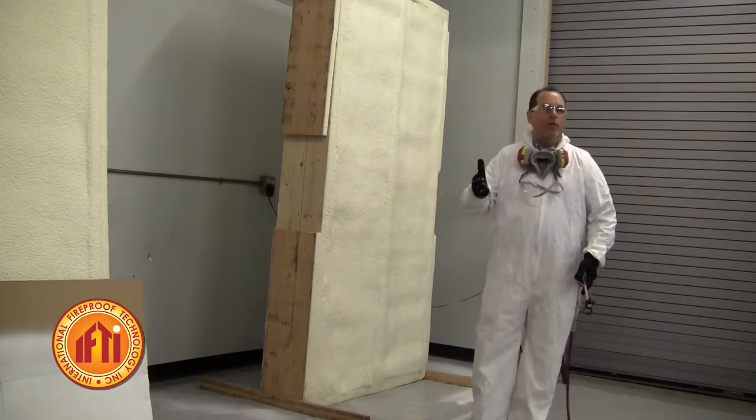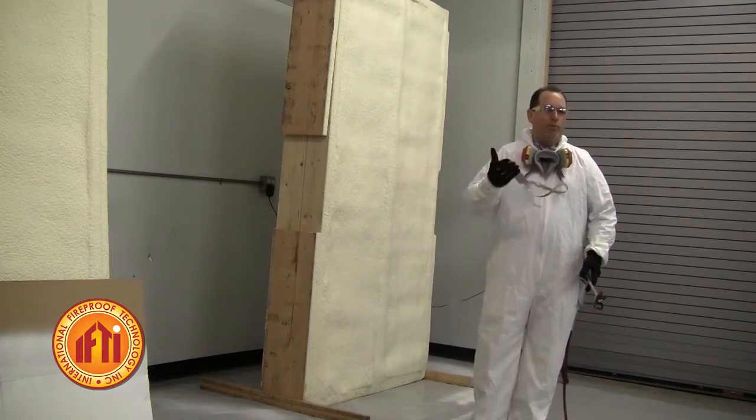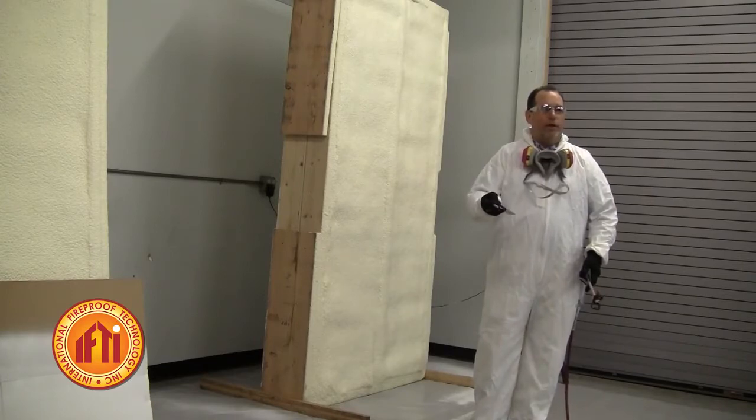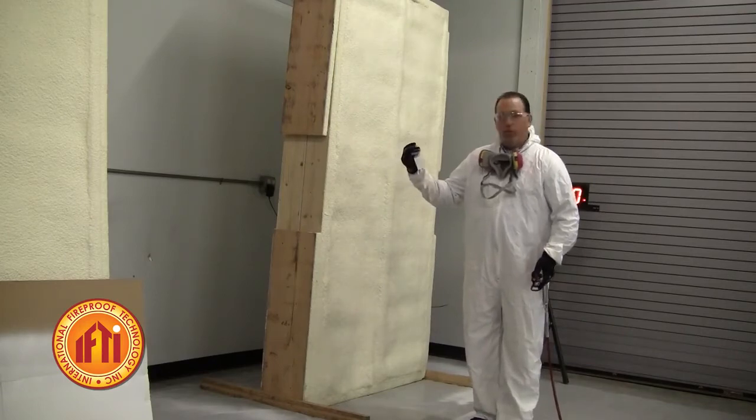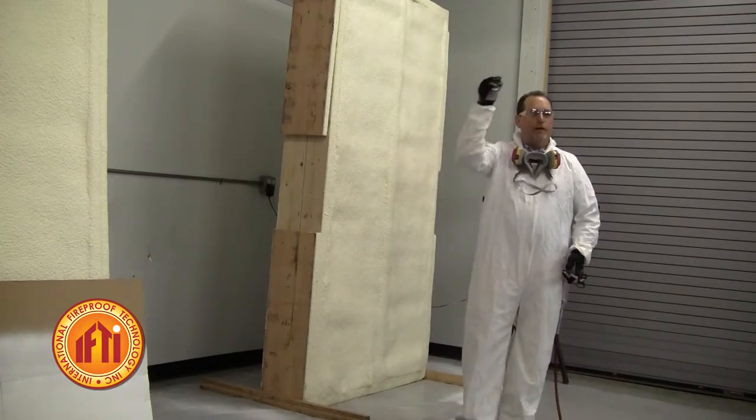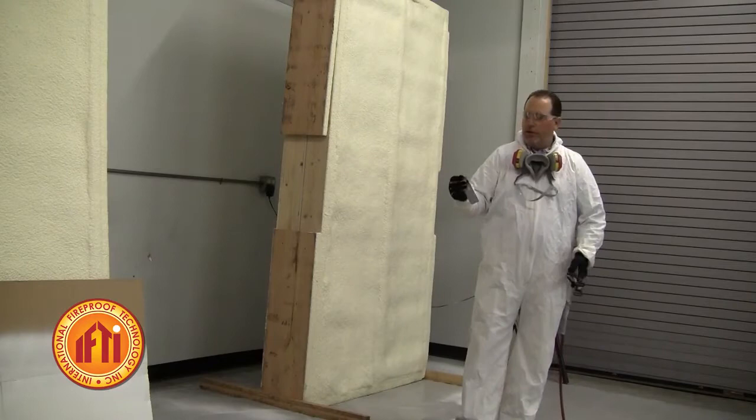So if an inspector comes back later on and wants to see the mill thickness, you can put an electronic meter on it and check it out as well. So it's very advantageous to have this tag on here when you're doing large jobs because you want to periodically test out your mill thickness throughout the jobs.